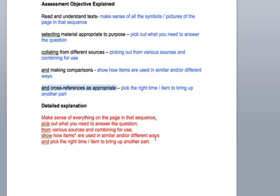So a detailed explanation, all in all then. All the skills that you need is you need to make sense of everything that's on the page in its sequence, you need to pick out what you need to answer the question from various sources and you need to combine them for use, and you need to show how items are used in a similar or different way. I've highlighted items there because the items could be referring to pictures or it could be referring to punctuation or words or literary techniques, whatever the question is asking you to do, depending on what the focus is, and pick the right time and item to bring it up.